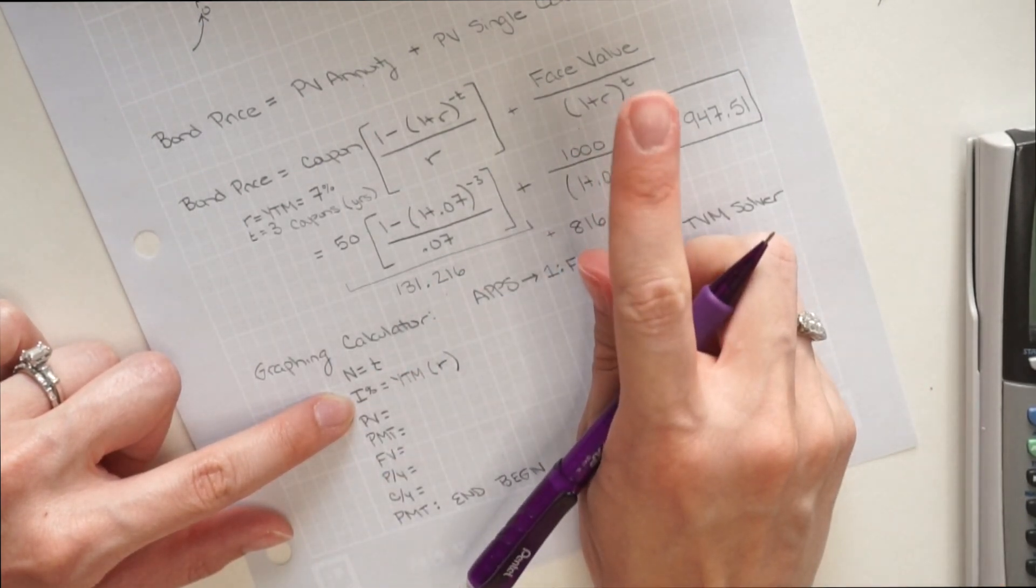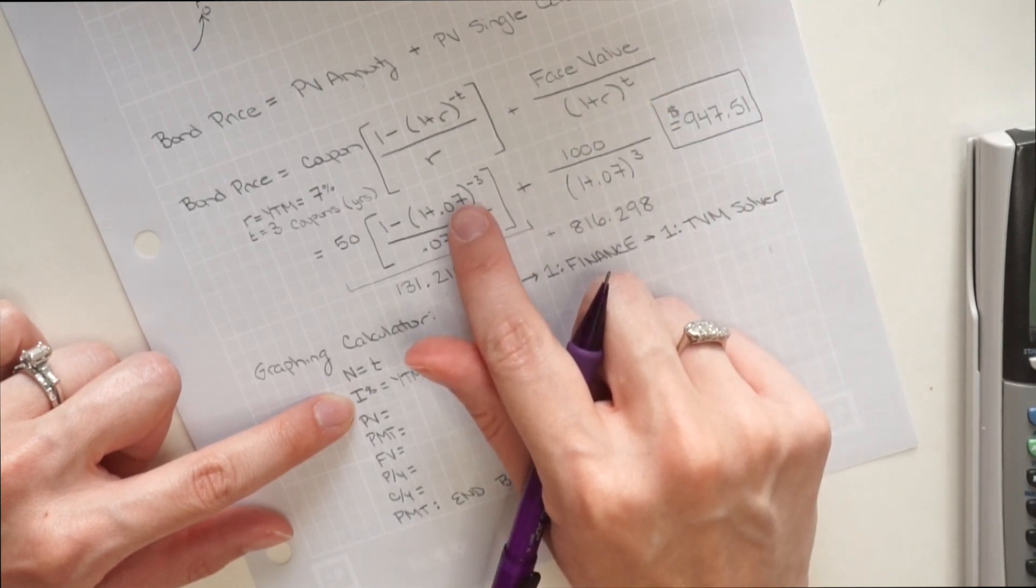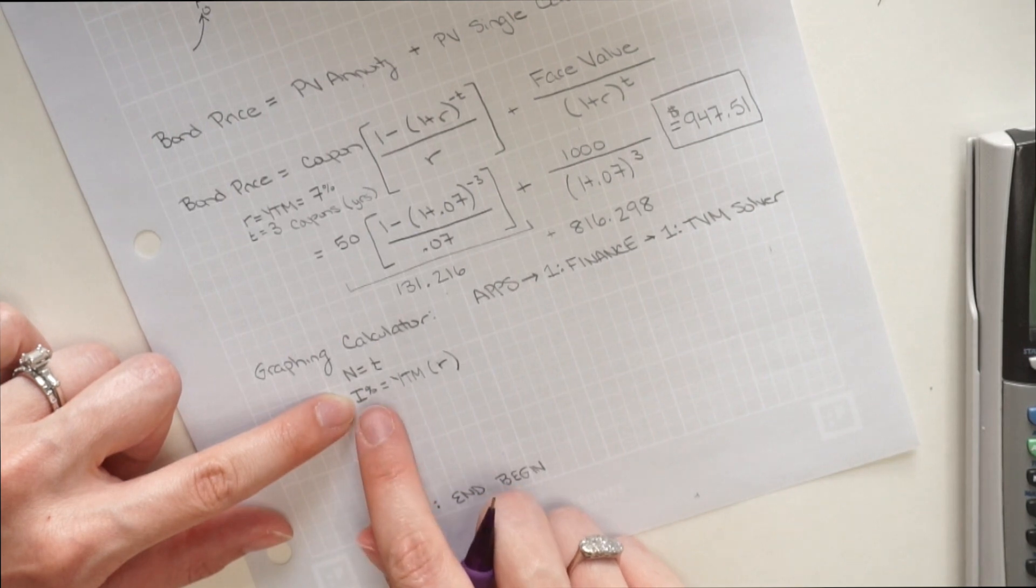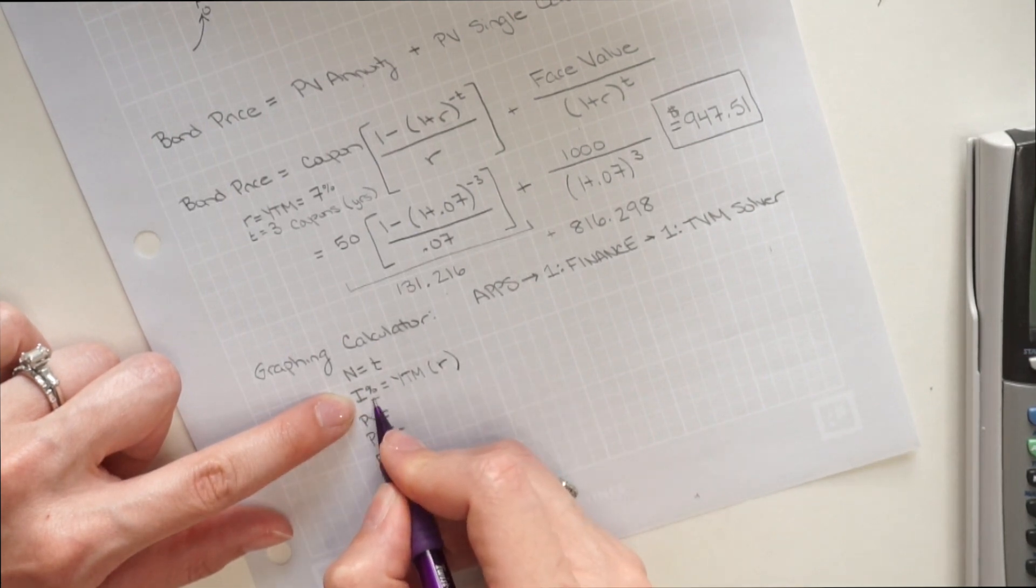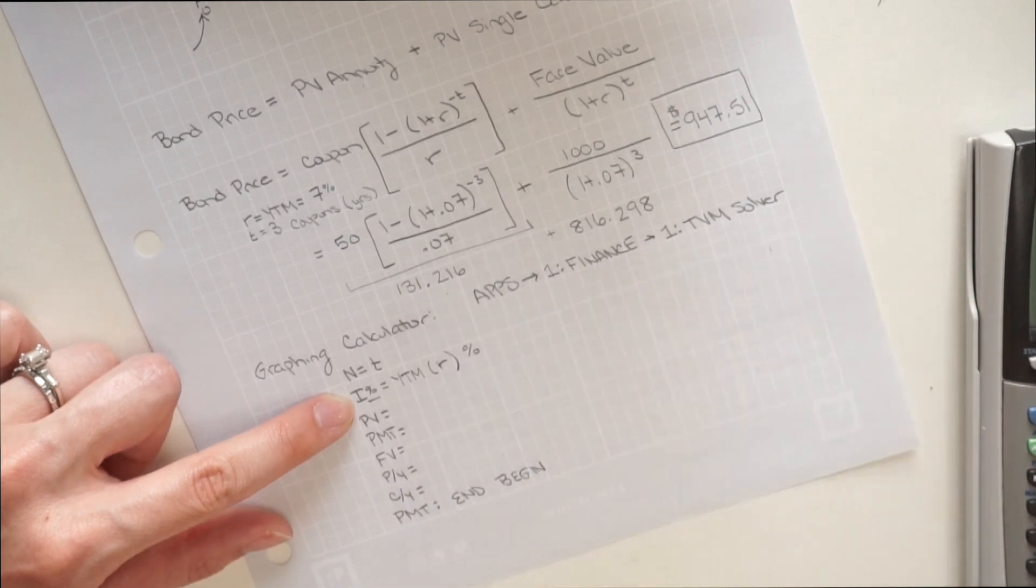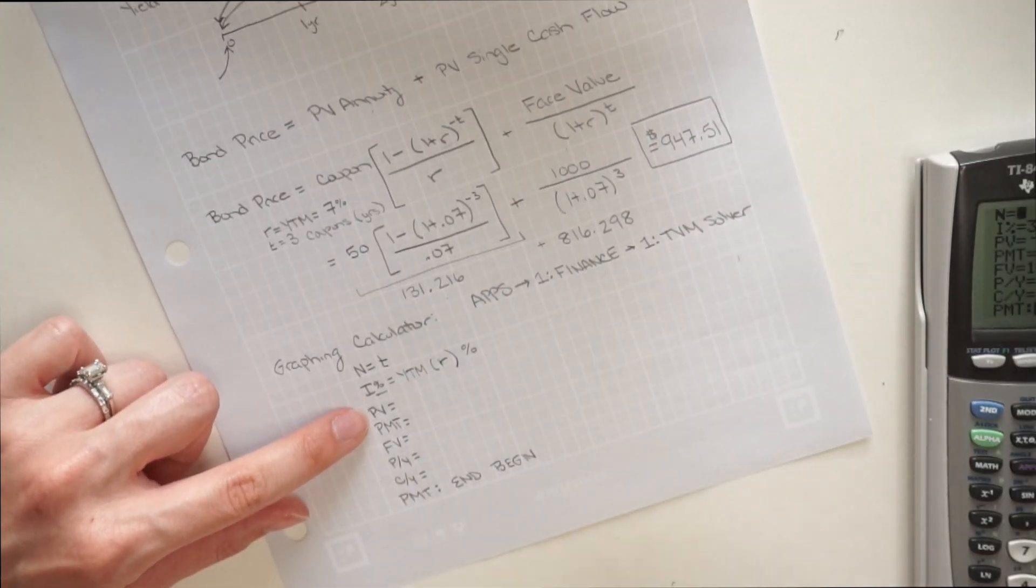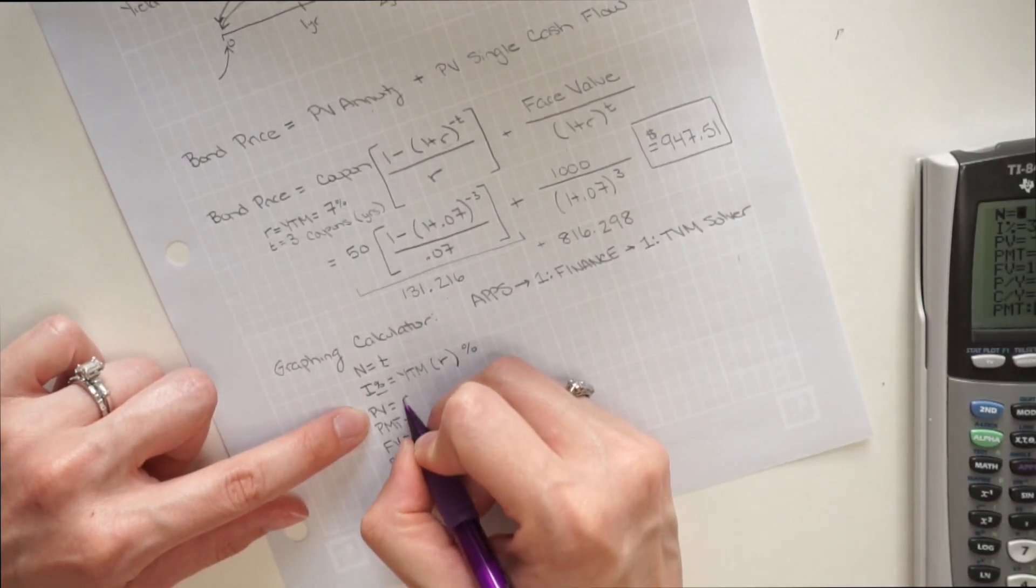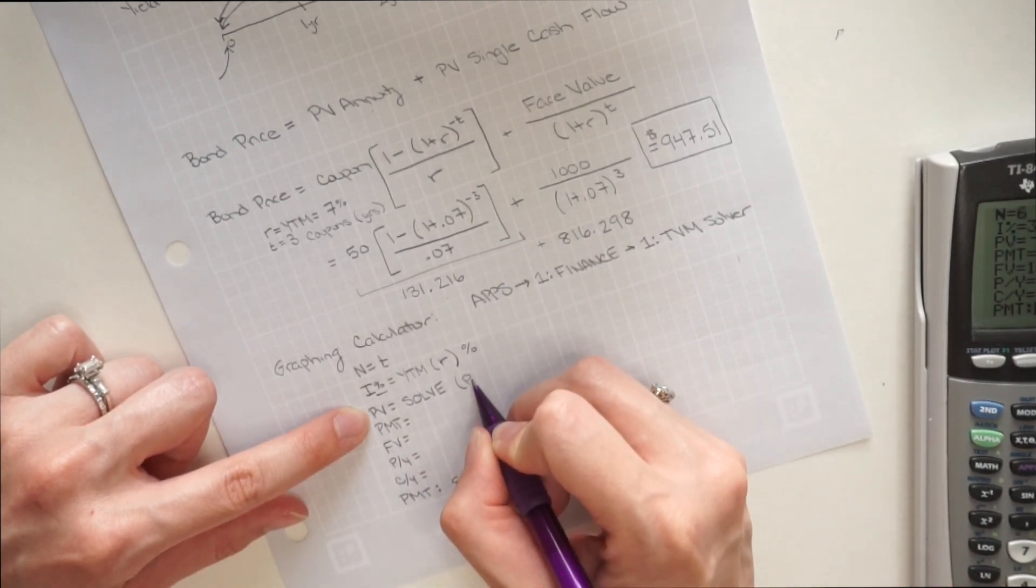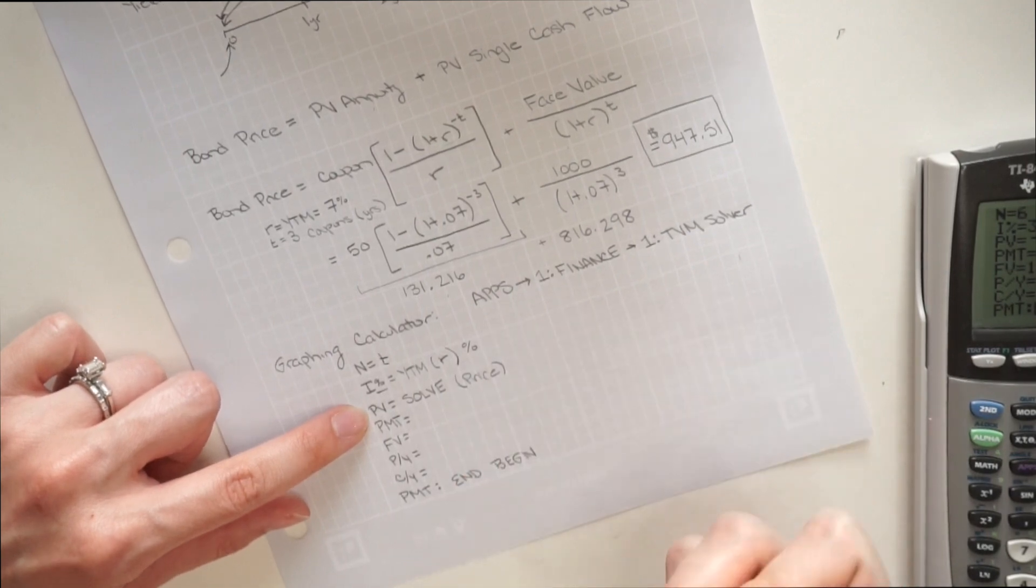Now, an important thing to note here is that in the equation, you put an R in decimal form. In the graphing calculator or financial calculator, you always put an R as a percentage. So you need to put an R in percentage form. Present value, that's what we're solving for. So we're going to leave that one empty for now. So we're solving for that price or value.